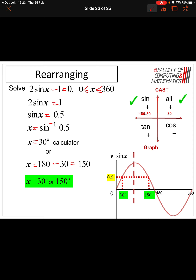Now let's look at rearranging a trig equation. To rearrange, I balance the equation. First I add 1 to both sides, which gives me 2 sin x equals 1. Then I divide by 2 and get sin x equals a half. Then I take the inverse of sine — shift sin of 0.5 — and it gives me 30 degrees. Sin is positive in the second quadrant, so I do 180 minus 30 to give me 150. My two answers are 30 and 150. Although it's slightly disguised, 2 sin x minus 1 equals 0 is exactly the same as finding sin x equals a half that we've already done.